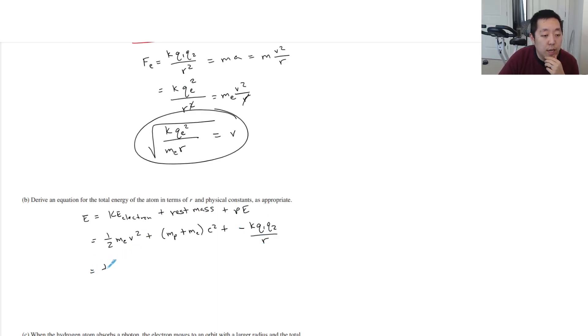So this would be one half, let me take a look. Total energy in terms of m, r, and physical constants. So it's mass of the electron. This squared would be k qe squared over mass of the electron times r. Those are all constants. And then we would do minus k q of the electron squared over r. And so these masses would cancel here.